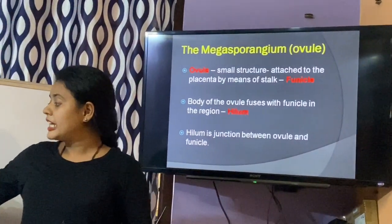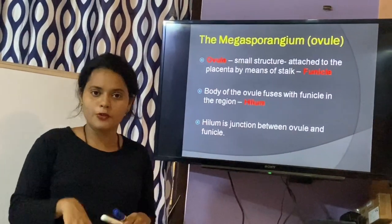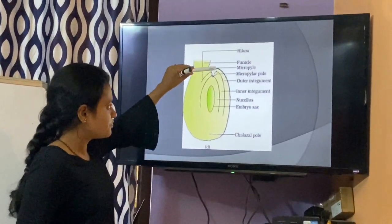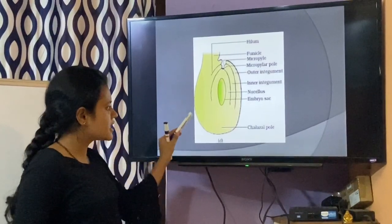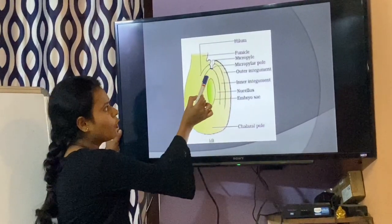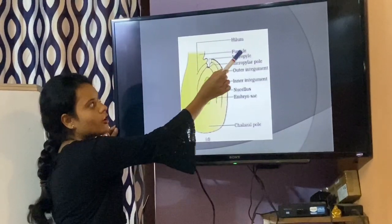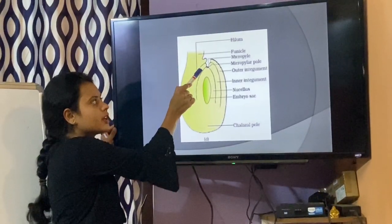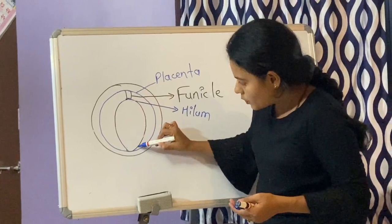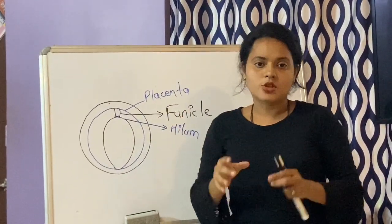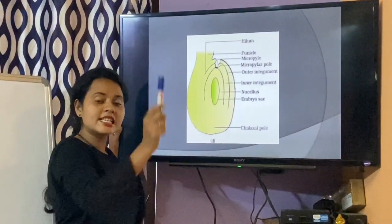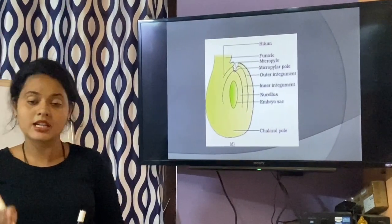Now I will tell you in detail the structure of megasporangia or the ovule. This picture is showing the structure of ovule. Inside the ovary there is placenta, and the highlighted structure is the ovule. Ovule is connected to the white portion (placenta) by means of a stalk called funicle. The portion where ovule is attached to the funicle is called hilum. The ovule is surrounded by two layers or two envelopes, and these envelopes are also called integuments — outer integument and inner integument.